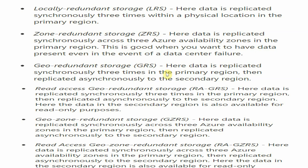Geo-Redundant Storage, or GRS, is used for disaster recovery. Data is replicated synchronously three times in the primary region and then replicated asynchronously to a secondary region. If the primary region goes down, the secondary becomes enabled. If the primary is working fine, the secondary is not accessible to you.